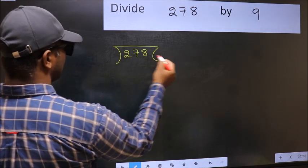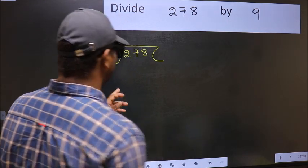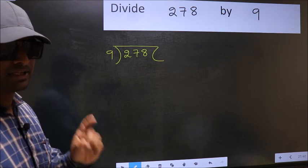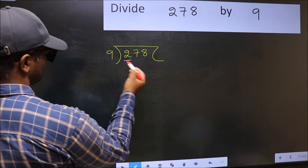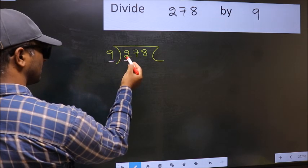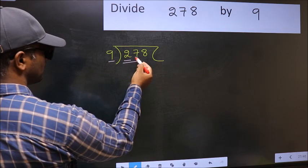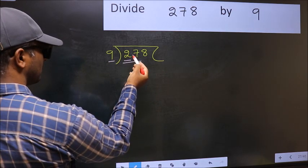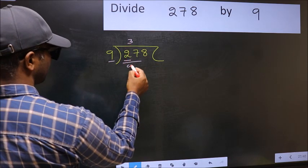278 and 9 here. This is your step 1. Next, here we have 2 and here 9. 2 is smaller than 9, so we should take two numbers, 27. When do we get 27 in 9 table? 9 times 3 is 27.